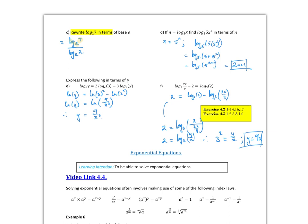Alright, what about d? If n is equal to log base 5 of x, find log base 5 of 5x squared in terms of n. So if I use my log base transformation, that's the same as saying x is equal to 5 to the power of n.